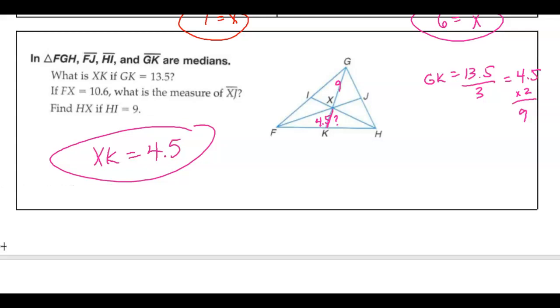If you want the equations, what we know is that XK equals 1 third of GK. You can think of it that way. So XK equals 1 third of 13.5. And you can just multiply that out, actually. So if you like the equations, you can set one up. If you just like to figure things out logically, you can do that strategy as well.